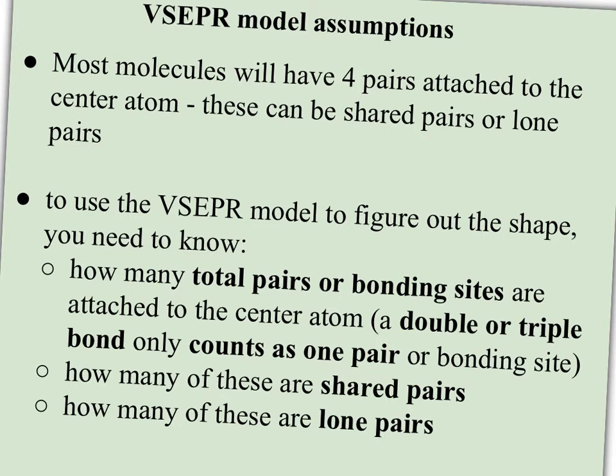And I think of them as bonding sites because a double or triple bond only counts as one pair or one bonding site. And then when you know how many bonding sites or pairs you have on the center atom, you need to know how many are shared pairs and how many are lone pairs, because remember, lone pairs are going to take up more space than the shared pairs.